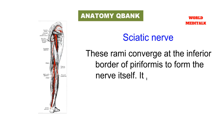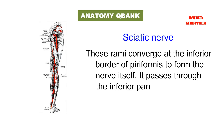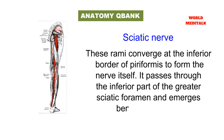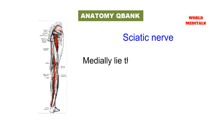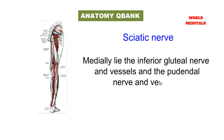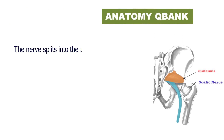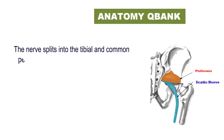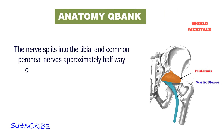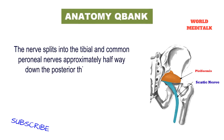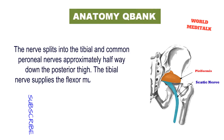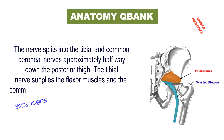These rami converge at the inferior border of the piriformis to form the nerve itself. It passes through the inferior part of the greater sciatic foramen and emerges beneath the piriformis. Medially lie the inferior gluteal nerve and vessels and the pudendal nerve and vessels. The nerve splits into the tibial and common peroneal nerve approximately halfway down the posterior thigh.